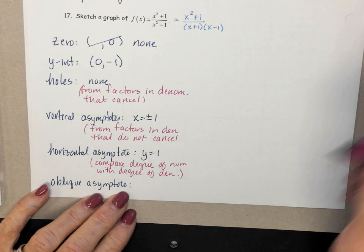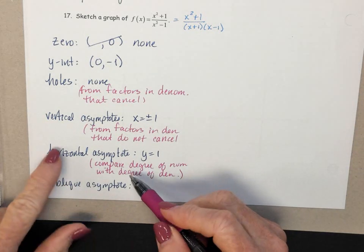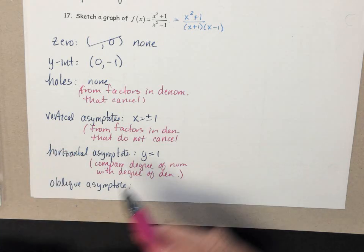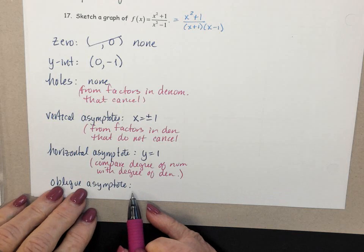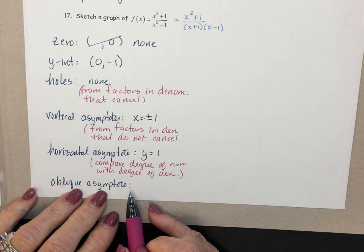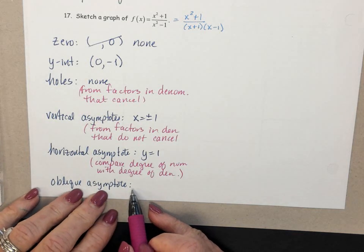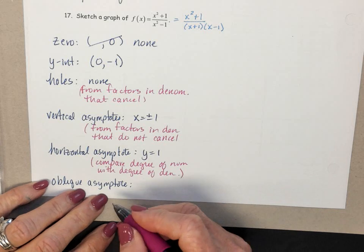Okay, so you can have one or the other, but not both. Or, you could have neither one. Essentially, to check for an oblique asymptote, we're going to look for the degree of the numerator to be exactly one more than the degree of the denominator.